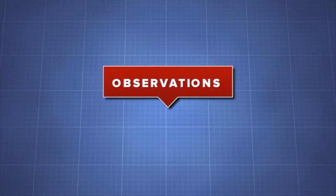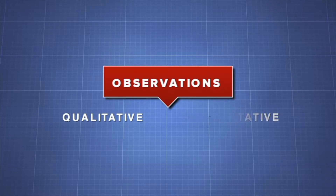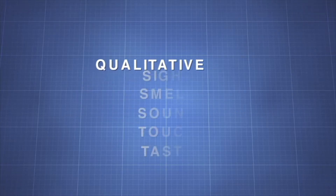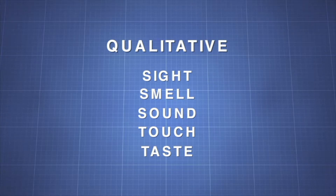An experimenter can make two main kinds of observations: qualitative and quantitative. Let's start with qualitative observations. These kinds of observations are those that you make with your five senses: sight, smell, sound, touch, and taste.